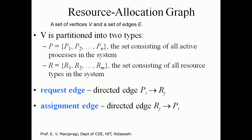Now let us move to the resource allocation graph. Since resources are allocated to different processes, this allocation can be graphically represented as a resource allocation graph. Like any graph, it is made up of a set of vertices V and a set of edges E. The vertex set V is partitioned into two types: P, the set of processes, and R, the set of resource types.